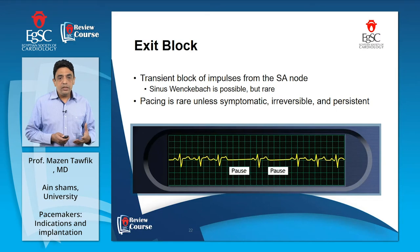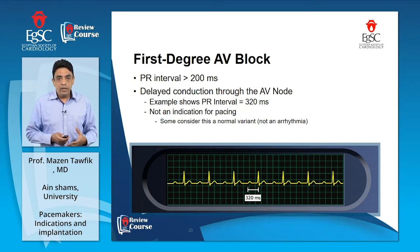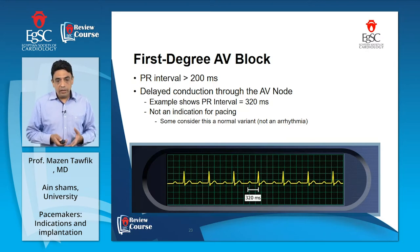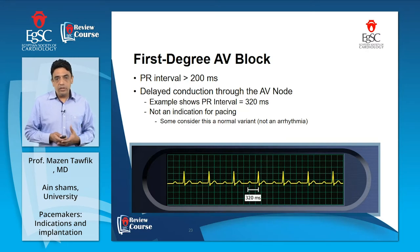Exit block is a transient block of the impulse exiting from the SA node to the atrial tissue. Pacing in this condition is rare unless it is very frequent, symptomatic and irreversible. First degree AV block is persistent prolongation of conduction at the atrioventricular tissue, where the PR interval — normally up to 200 milliseconds — is more than 200 milliseconds, for example around 320 milliseconds. This is delayed but fixed conduction, often not symptomatic unless the patient has severe diastolic dysfunction or hemodynamic compromise.